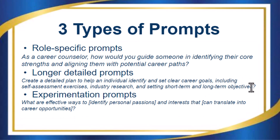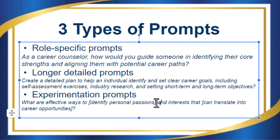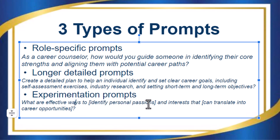Then we have experimentation prompts — like: what are effective ways to identify personal passions and interests that can translate into career opportunities? You can basically use this as a formula. For example: what are effective ways to write blog articles about artificial intelligence that I could use on my blog?